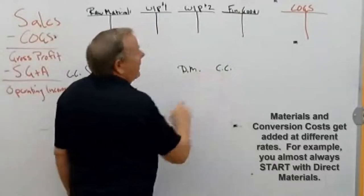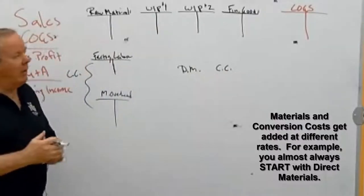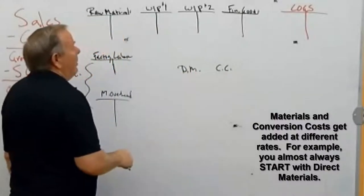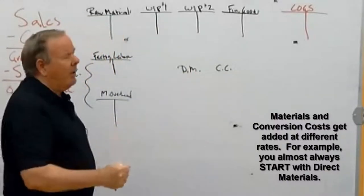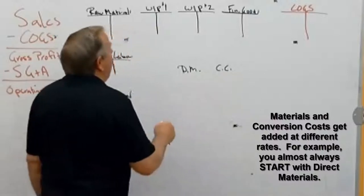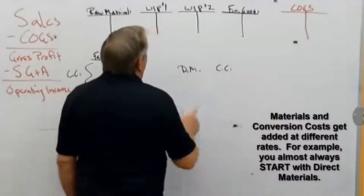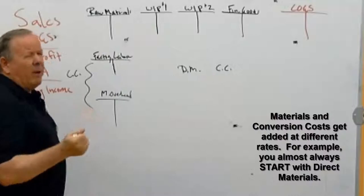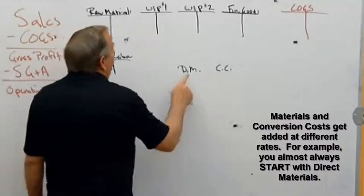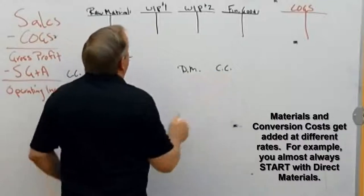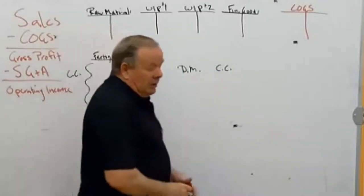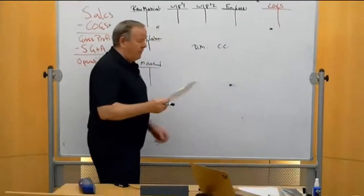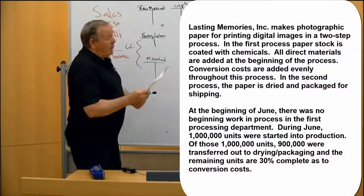The reason we break out materials and conversion costs is that they get added at separate rates and times. For example, if we were making chocolate chip cookies, we'd add all the materials at the beginning, but the conversion costs — the labor of mixing and baking — happen later. To get the best picture of how much work we did each month, we look at equivalent units of direct materials and equivalent units of conversion costs.